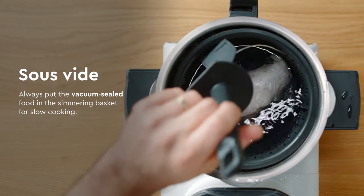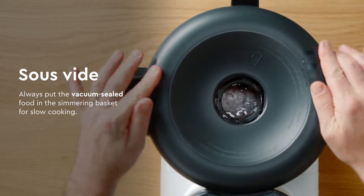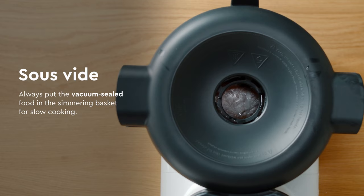It can also act as a barrier between the blade and the food if required. If you are sous-vide cooking, the simmering basket is a must. You put the food inside the simmering basket, then drop the simmering basket inside the mixing bowl.